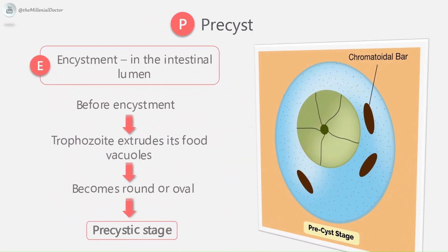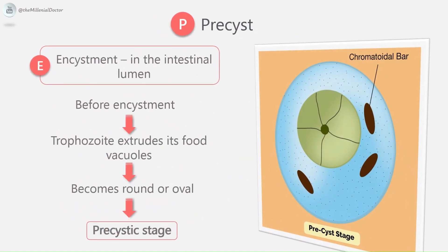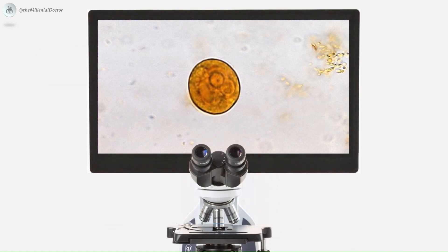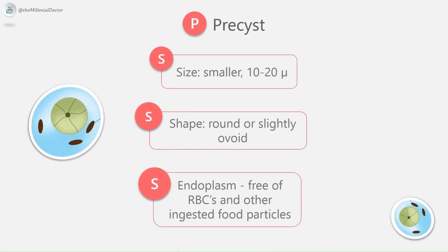Next is the pre-cyst stage. Trophozoites undergo encystment in the intestinal lumen. Encystment does not occur in the tissues nor in feces outside the body. Before encystment, the trophozoite extrudes its food vacuoles and becomes round or oval, about 10–20 micrometers in size. It contains a large glycogen vacuole and two chromatoid bars. It then secretes a highly refractile cyst wall around it.